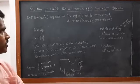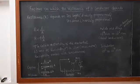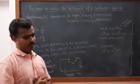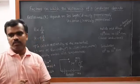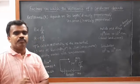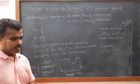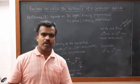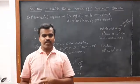The factors on which the resistance of a conductor depends — how does resistance depend on different factors? Resistance mainly depends upon length and area of cross-section.